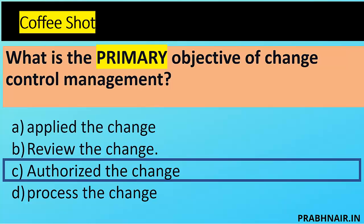If the question had asked 'what is the best alignment of change management,' then reviewing or processing the change might apply. But since it asks for the primary objective, the ultimate goal of any change management system is to ensure all changes are documented and unauthorized modifications are prevented. That is why the answer is C: authorize the change. Domain 4 service management experience is helpful for such questions.